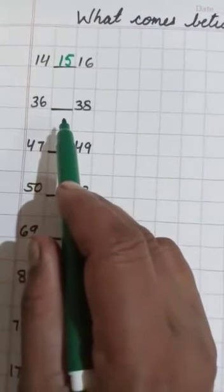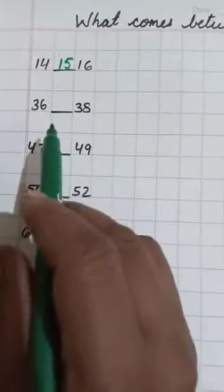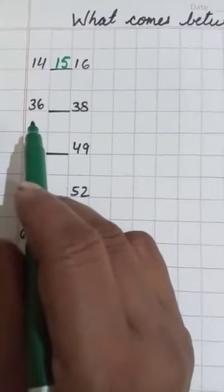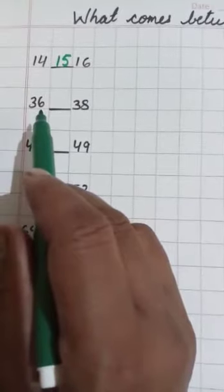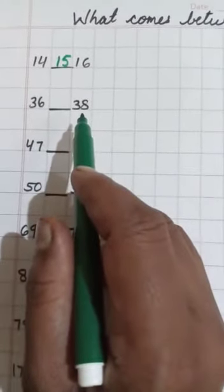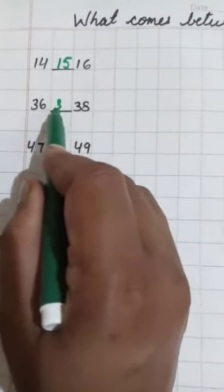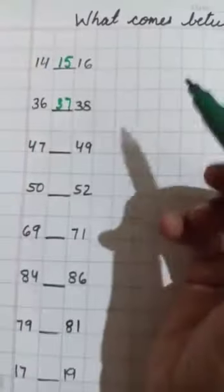The next number is 36-38. So, children, tell me, which number is come between 36 and 38? Yes, 37.